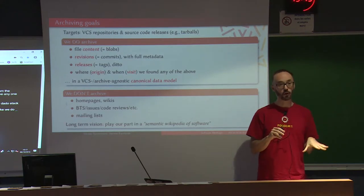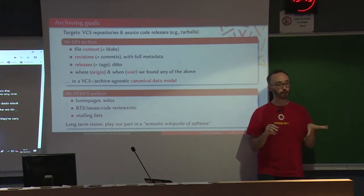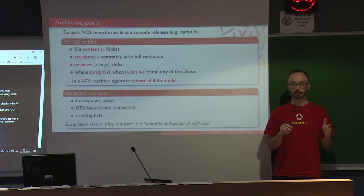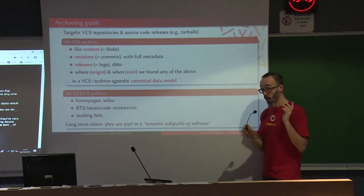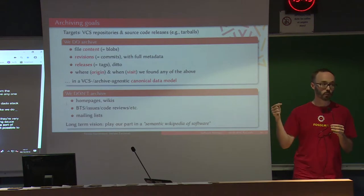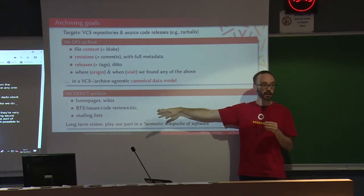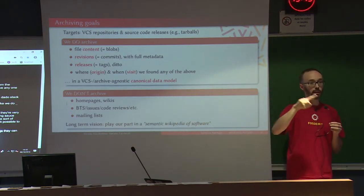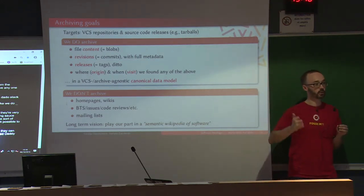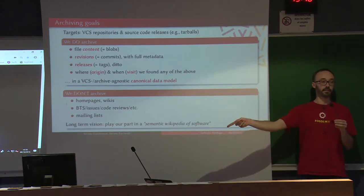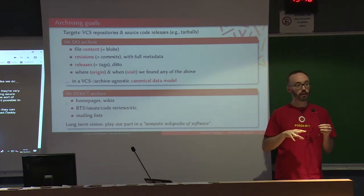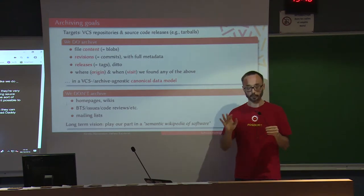What we do not archive is everything else — bug tracking systems, code reviews, mailing lists, websites. Not because they're unimportant — we know they're very important for development — but we feel the mission of archiving source code is already quite challenging and we don't want mission creep. Still, we make it possible to pinpoint any artifact we've archived so that others archiving those things can do cross-matching and create something like a big Wikipedia of software. But for now, we are not focusing on doing that ourselves.